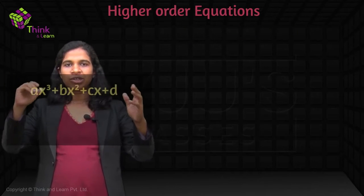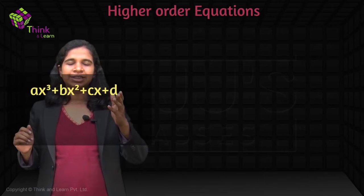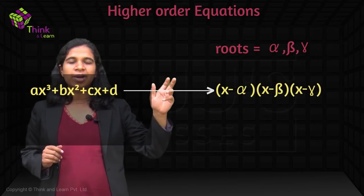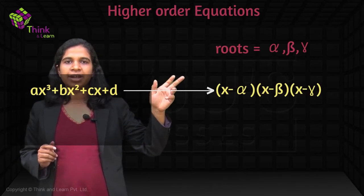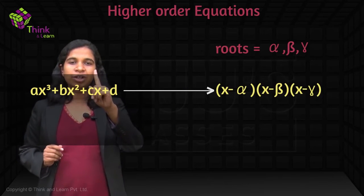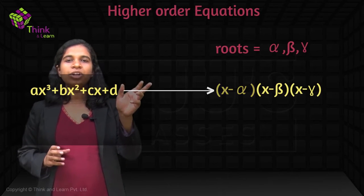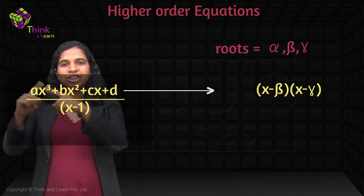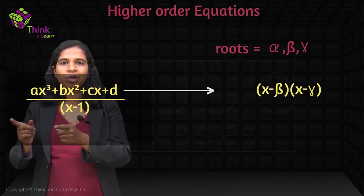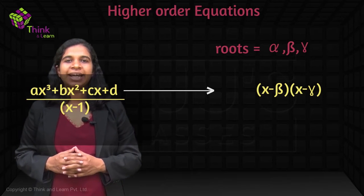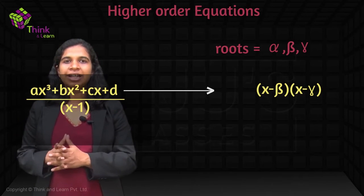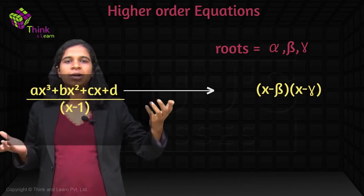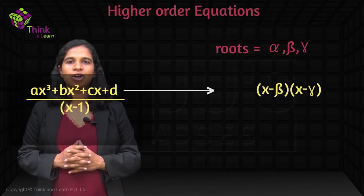Because if this is a cubic equation AX cubed plus BX squared plus CX plus D, and alpha, beta, gamma are the three roots, I can write this equation as (X minus alpha)(X minus beta)(X minus gamma). Now if one root is given — say alpha equals 1 — then I already know one bracket is (X minus 1). I just divide my cubic equation by (X minus 1), which gives me the second factor, which is nothing but (X minus beta)(X minus gamma) — a quadratic equation. So you can very easily solve it.